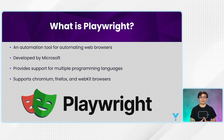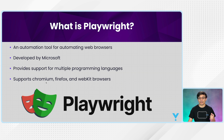Playwright supports Chrome, Firefox, and Safari. It comes with its own browsers — Chromium, which is equivalent to the Chrome browser application, Firefox, and WebKit, which refers to the Safari browser. So all the major browsers are supported in Playwright.